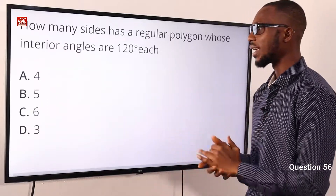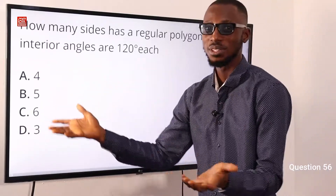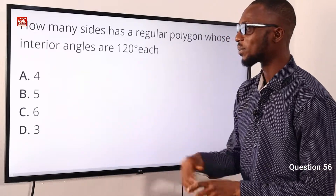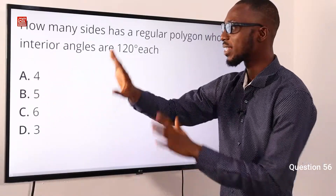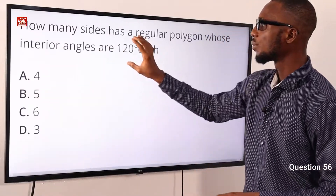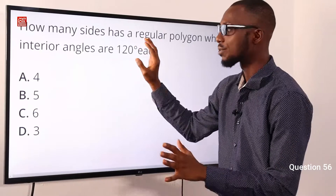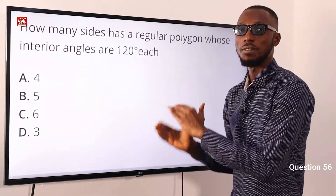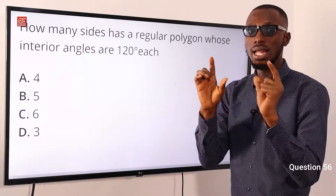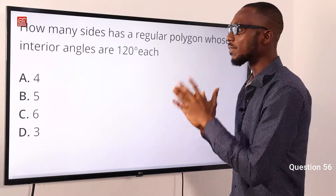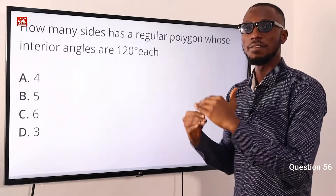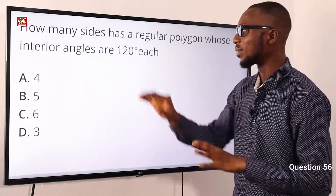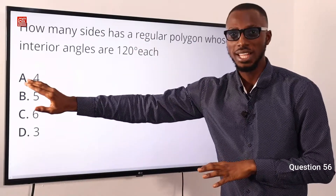Let's slot in the options. For n equals 4: 360 divided by 4 is 90, and 180 minus 90 is 90 degrees — not 120. Option A is eliminated. For n equals 5: 360 divided by 5 is 72, and 180 minus 72 is 108, not 120. Option B is invalid.